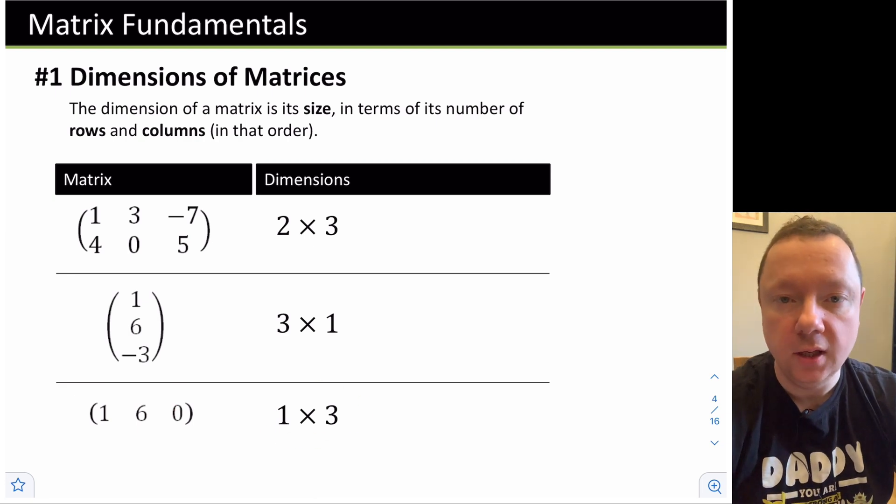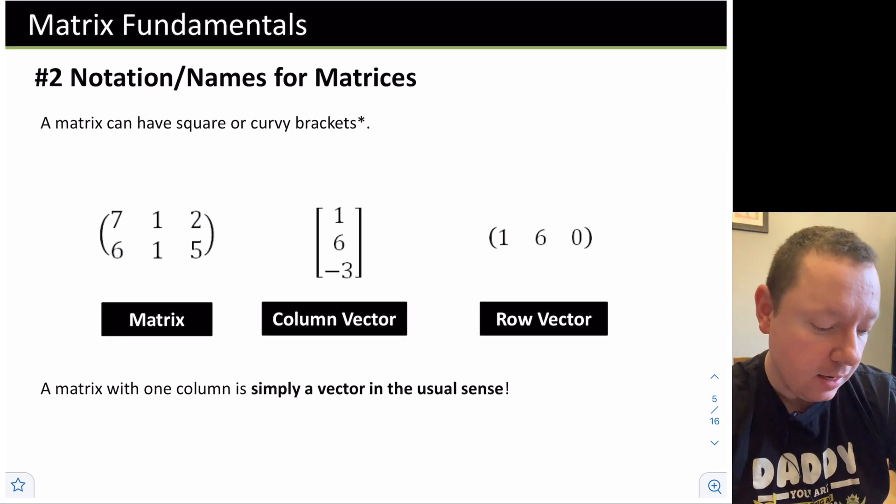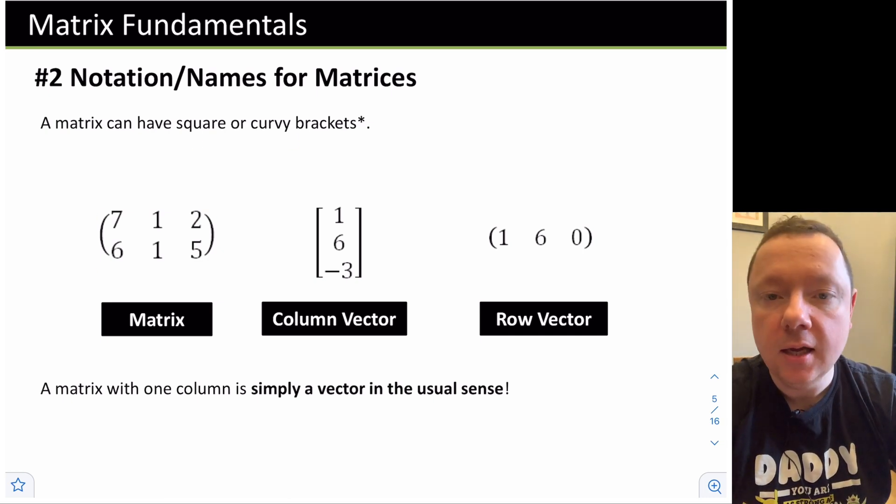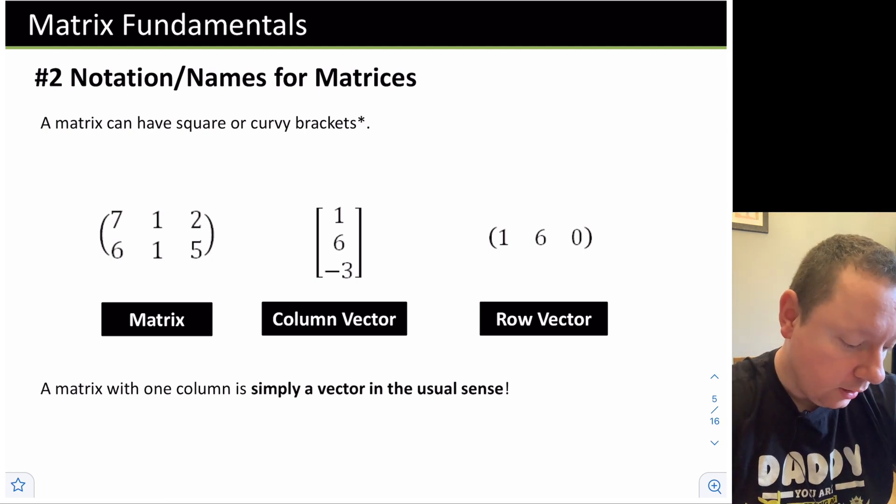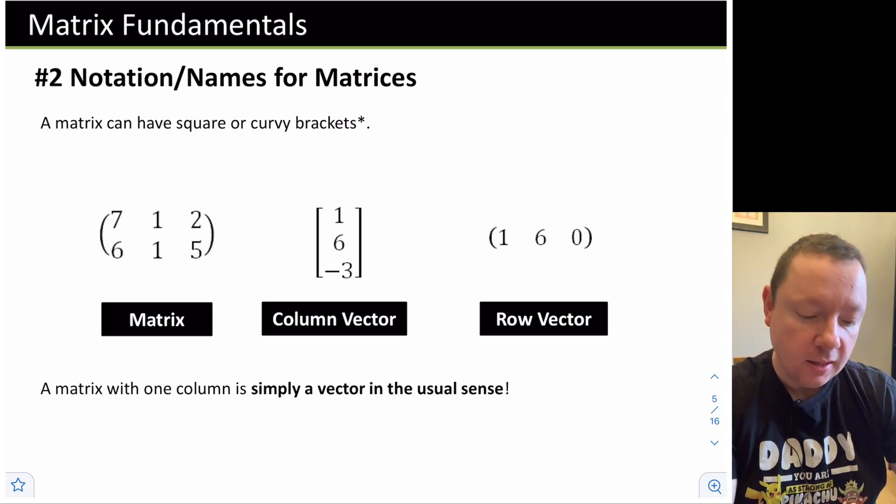A little bit of notation for a matrix. A matrix can have curly or square brackets. Usually we use curly brackets, but if you ever see a square bracket, it's still a matrix. Here's a normal matrix. The order of this matrix would be 2 by 3 because it's got 2 rows and 3 columns. Any matrix which only has 1 column would also be a column vector. Similarly, a row vector, 1 row, any number of columns, is a row vector.